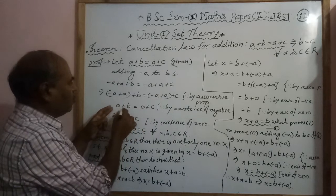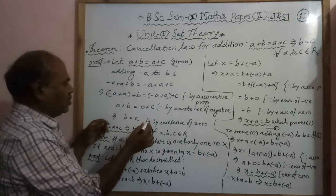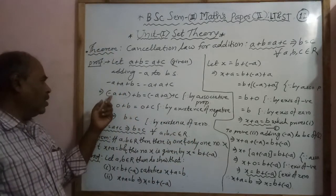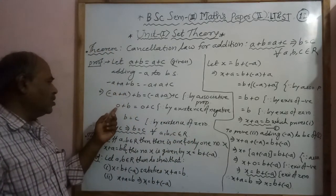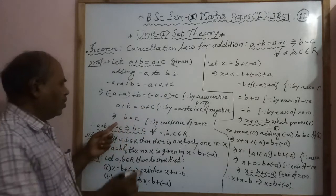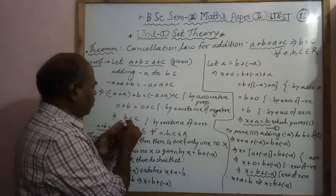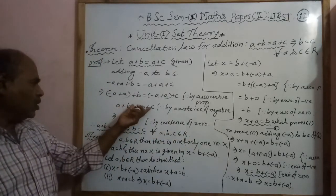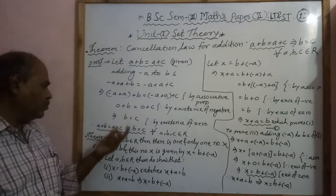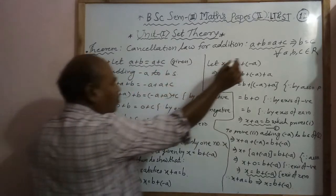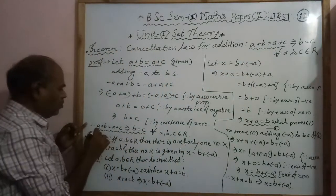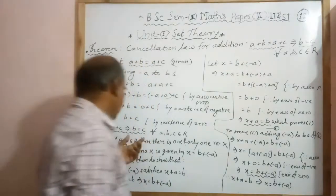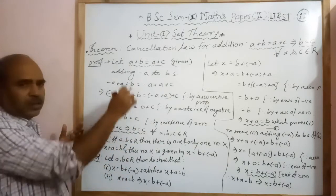By the associative property, minus a plus a equals 0, by the existence of the negative. Therefore we get zero plus b equals zero plus c. Then by the existence of zero, adding zero to any number gives the same number, so b equals c. We started with a plus b equals a plus c and derived b equals c. Hence the cancellation law is proven.